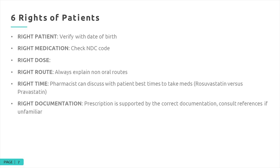Right medication: check the NDC code. We'll talk about national drug codes and how beneficial they can be in verifying the appropriate medication. The right dose is primarily the pharmacist's responsibility, and we have a lot of software that will catch dosing issues. For example, one of my pharmacy technicians came over with a question about a Symbicort inhaler billed for a quantity of 120, which wasn't going through. They were looking at the 120 puffs rather than the 10.2 grams, which is how you bill the Symbicort inhaler. It kept coming up as an overdose.